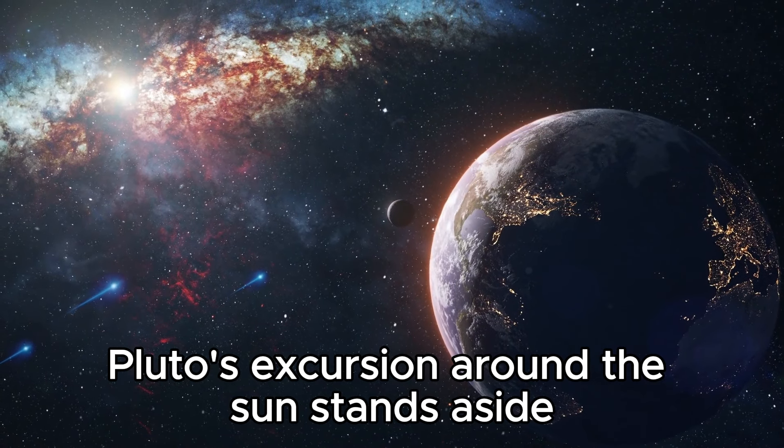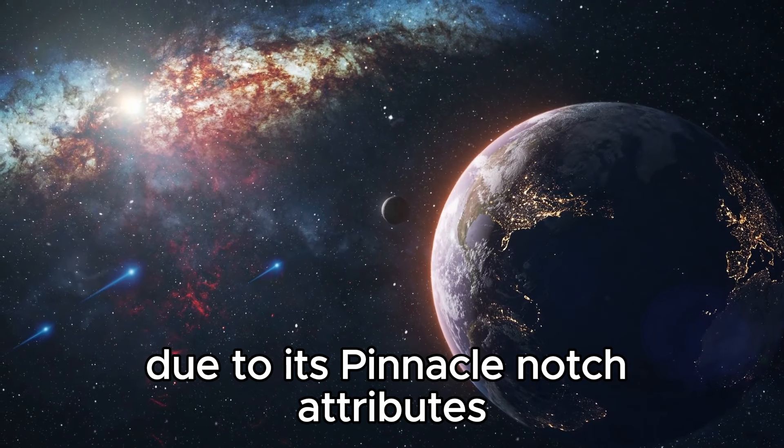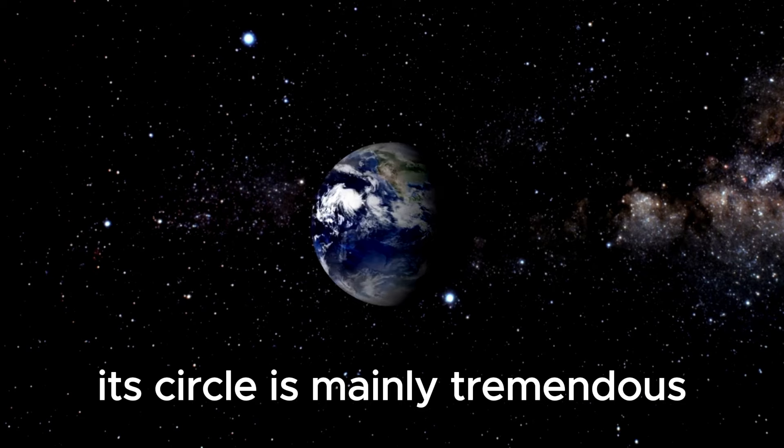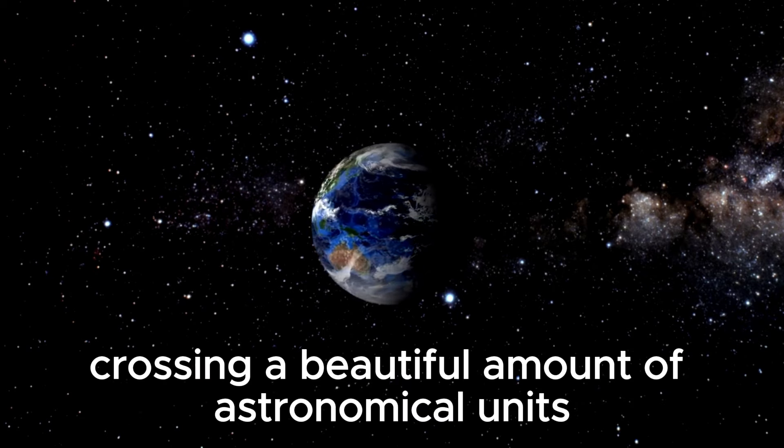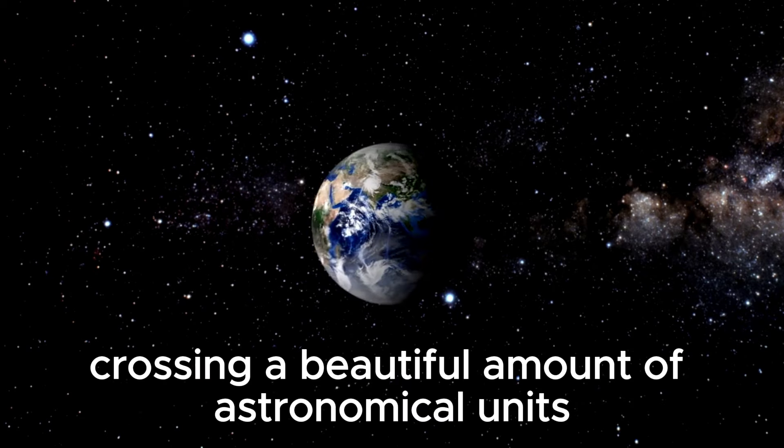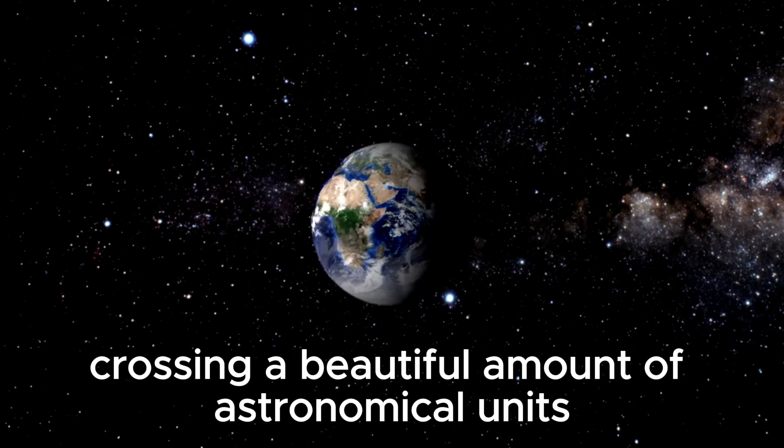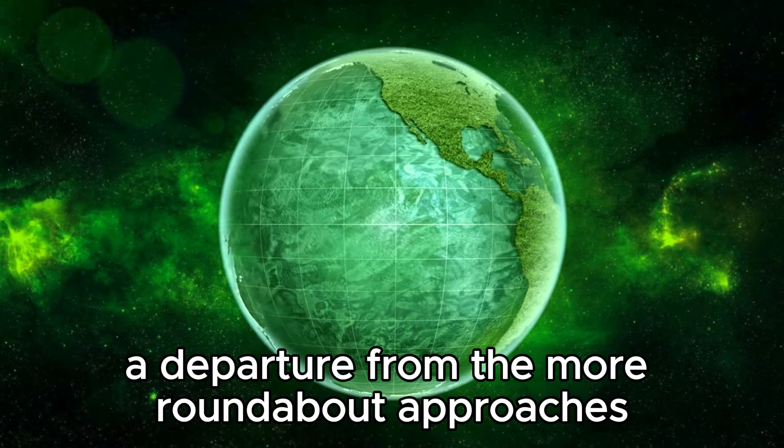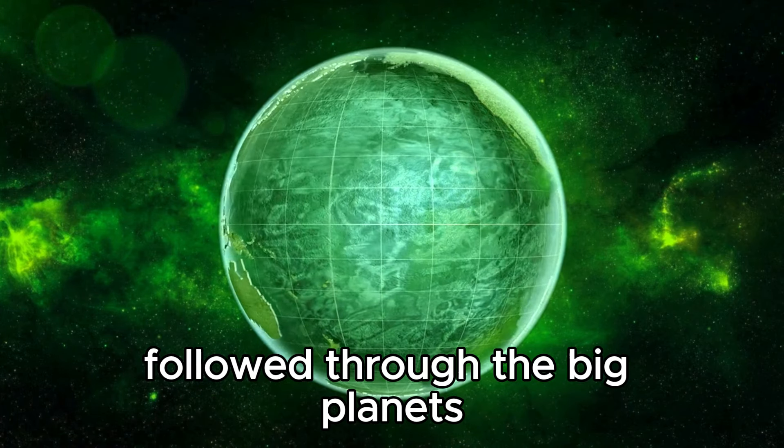Pluto's journey around the Sun stands aside due to its unique attributes within our nearby planet organization. Its orbit is mainly extensive, crossing a significant amount of astronomical units. Since its discovery in 1930, Pluto has yet to complete a full revolution around the sun. Adding to its character is the profoundly stretched state of its orbit, a departure from the more circular approaches followed by the large planets.